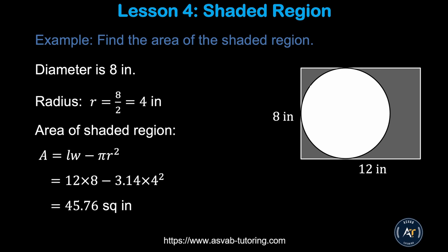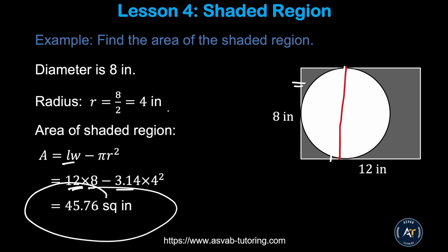Now we'll learn how to find the shaded area. The shaded area means you have to find the area of the rectangle and then subtract the area of the circle. The width of the rectangle is the same as the diameter of the circle, which is 8, so the radius equals 8 divided by 2, which is 4. The shaded area equals the area of the rectangle minus the area of the circle: 12 times 8 minus pi times 4 squared equals 40.76 square inches.